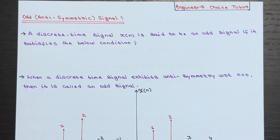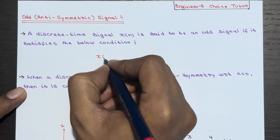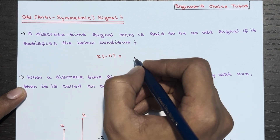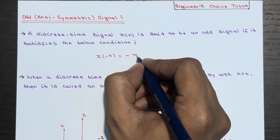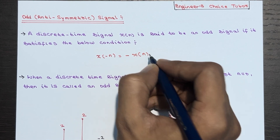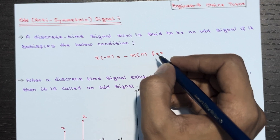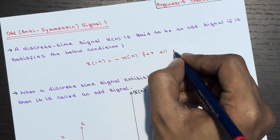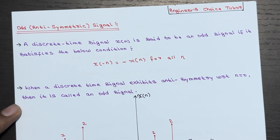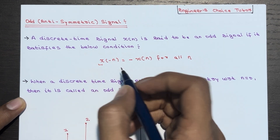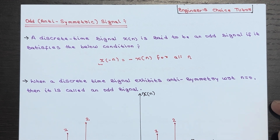On the other hand, an odd signal is a discrete time signal X(n) that satisfies the condition: X(-n) = -X(n) for all n. If a signal satisfies this condition, then it is an odd signal or anti-symmetric signal.